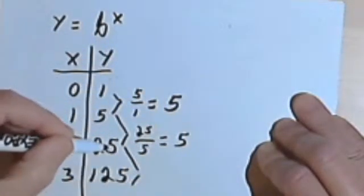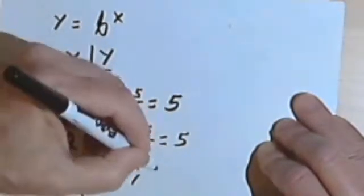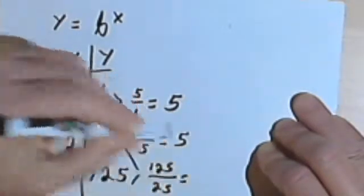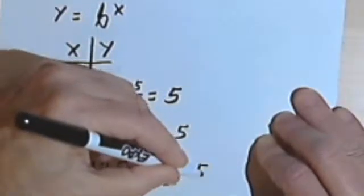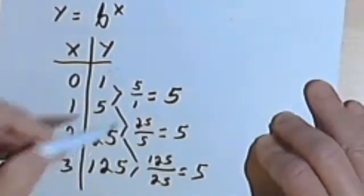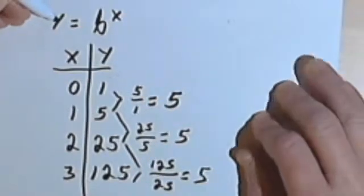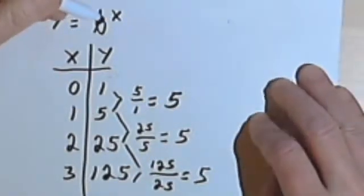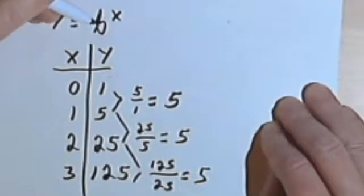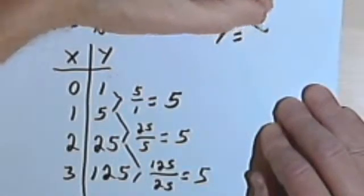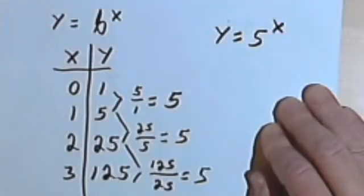And then the same thing will happen with 25 and 125. I'm going to write 125 divided by 25, reduce that, and that becomes a 5. So my common ratio is 5. Now getting back to this general equation, y equals b to the x, the b is the common ratio. So I can just write y equals 5 raised to the x power.